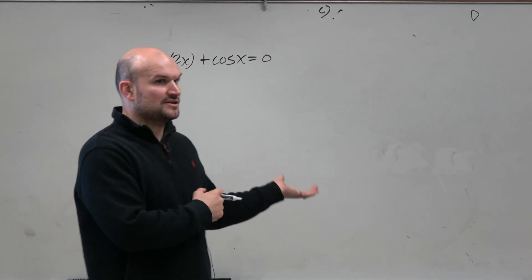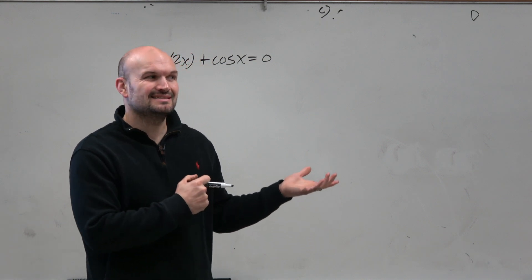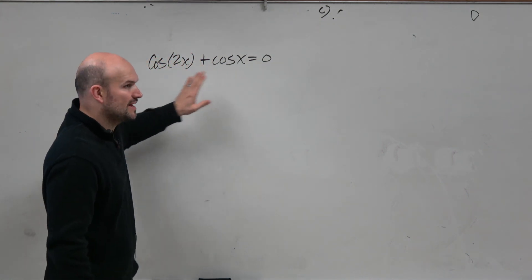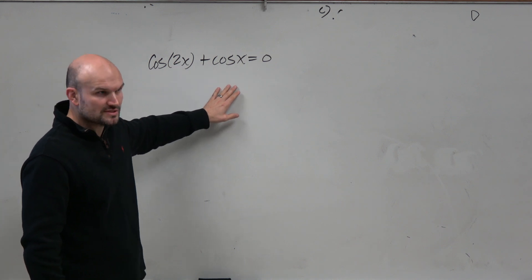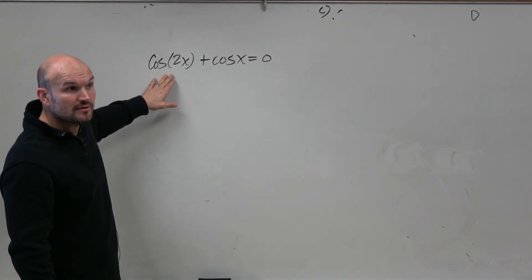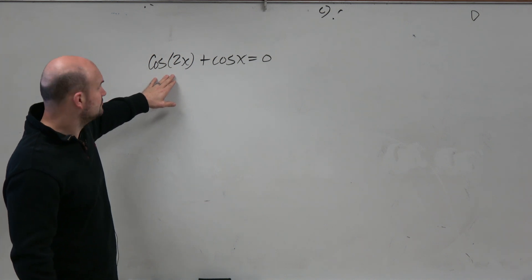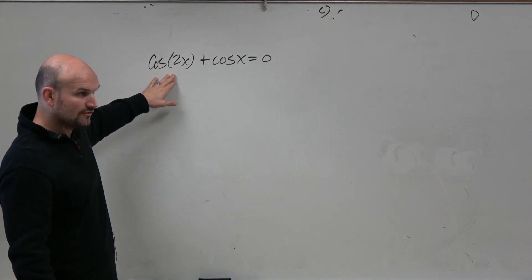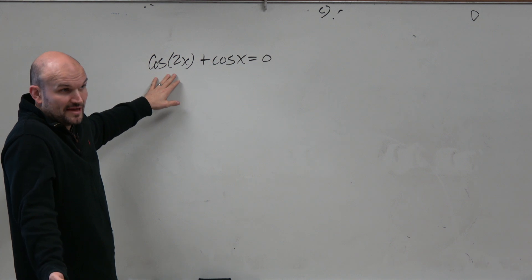Should we factor it out? We can't do that either because they don't have the same arguments. We can't just factor out a cosine. So then we say, oh, I see cosine of 2x. Therefore, I could use the double angle formulas. Now which formula though? Because I got three of them.